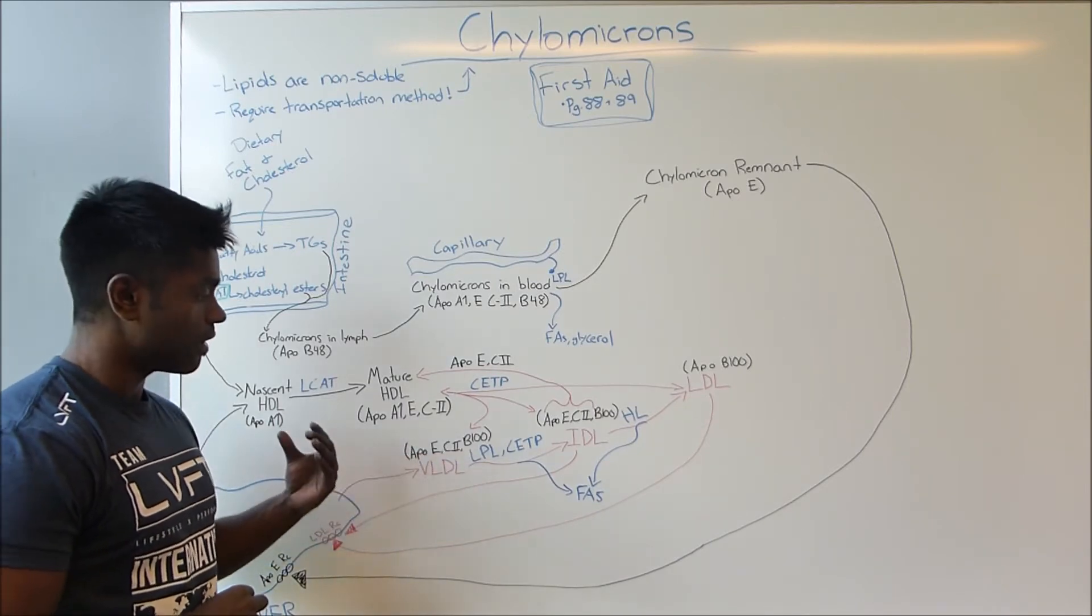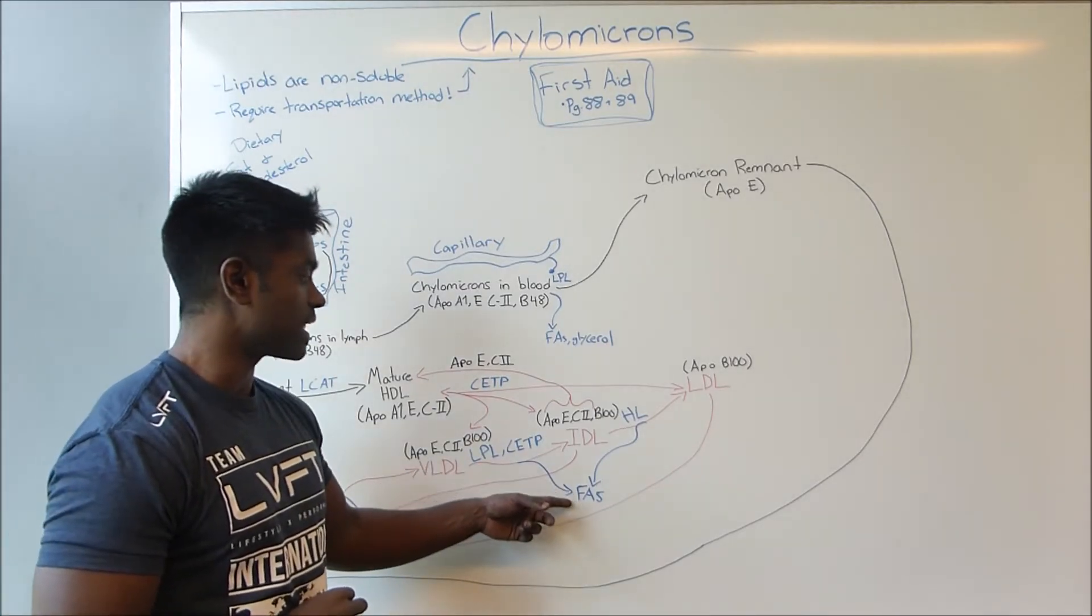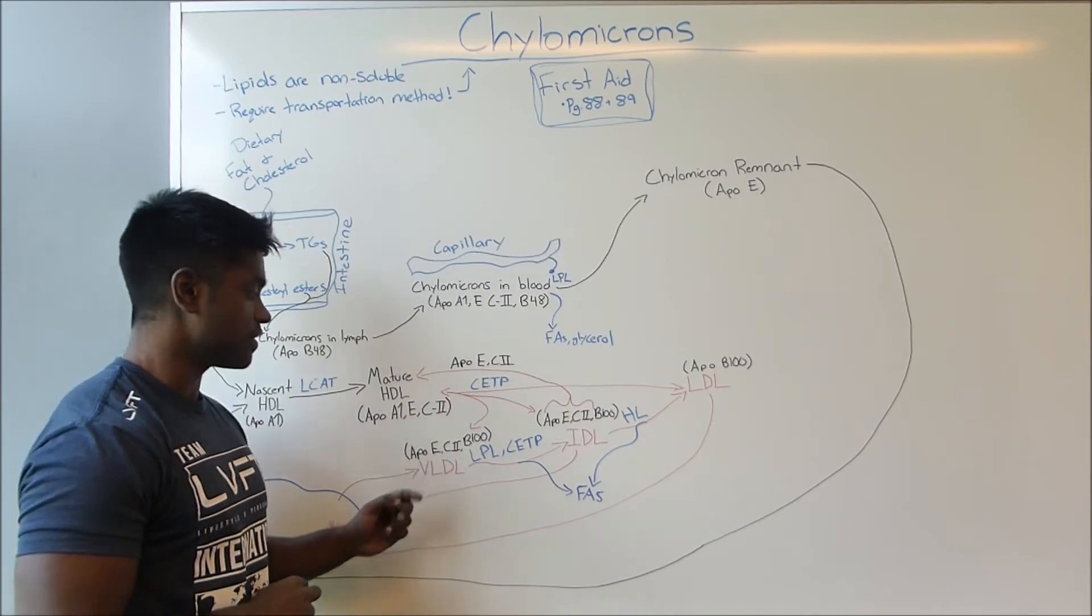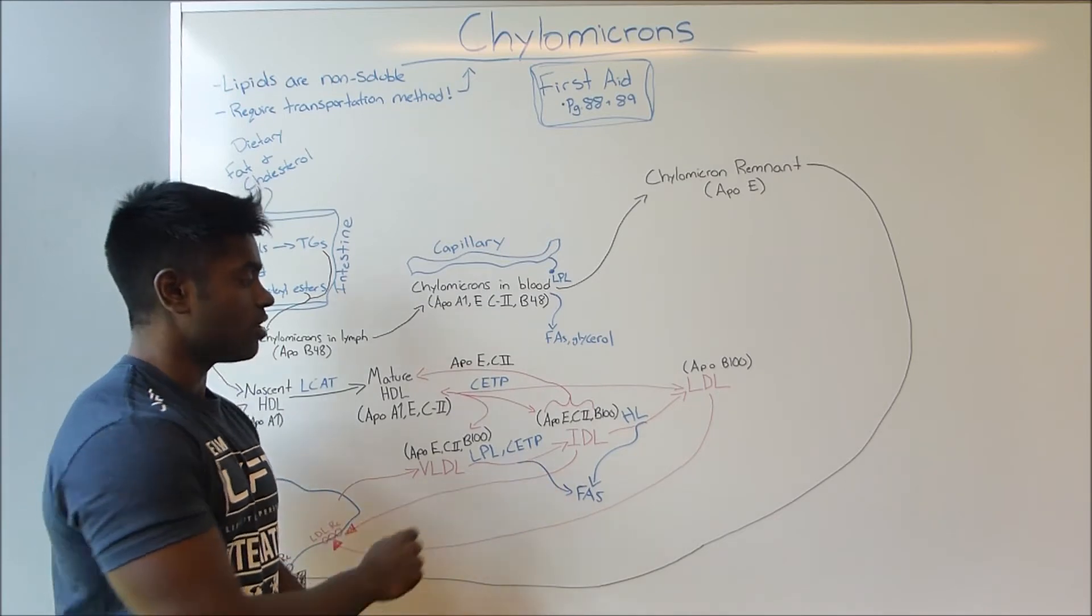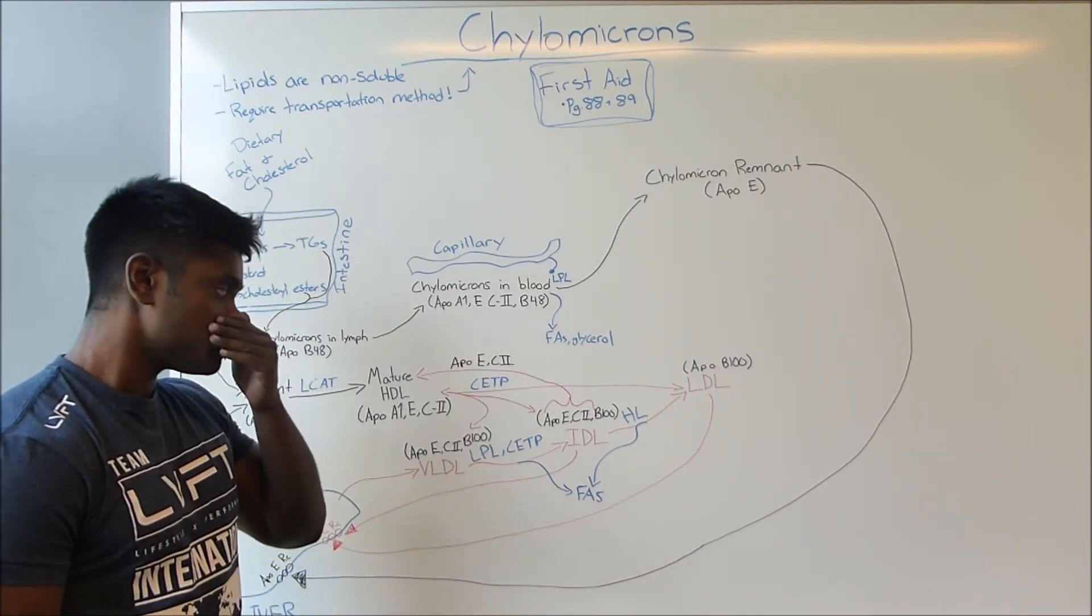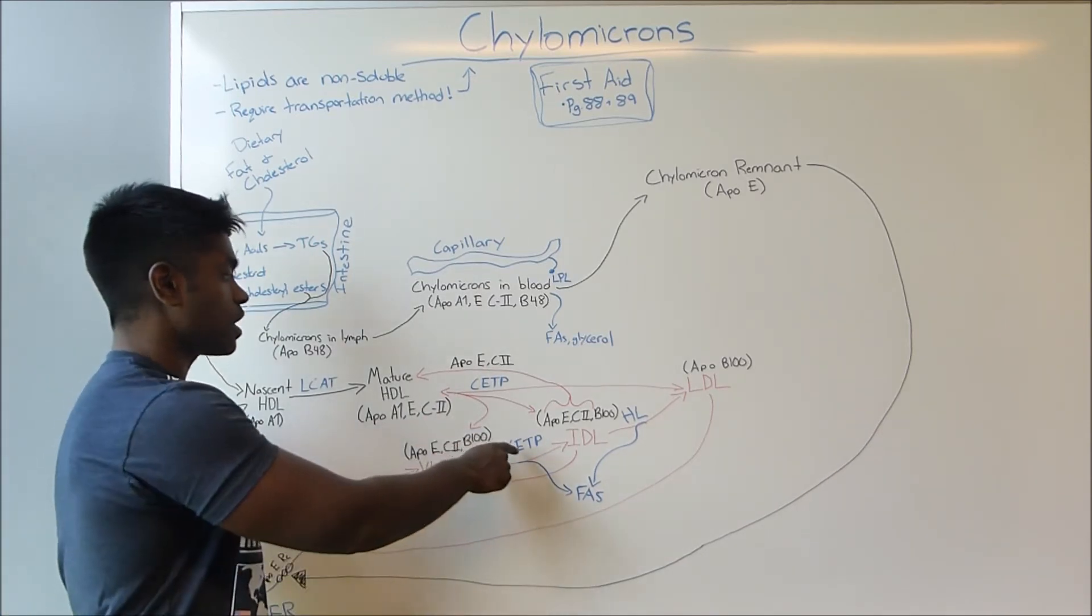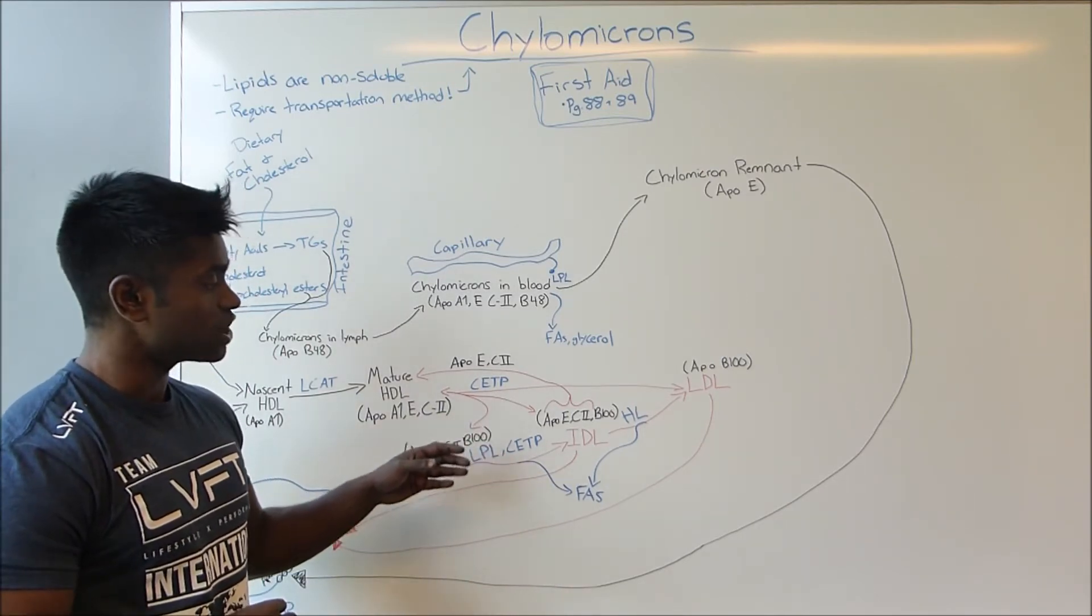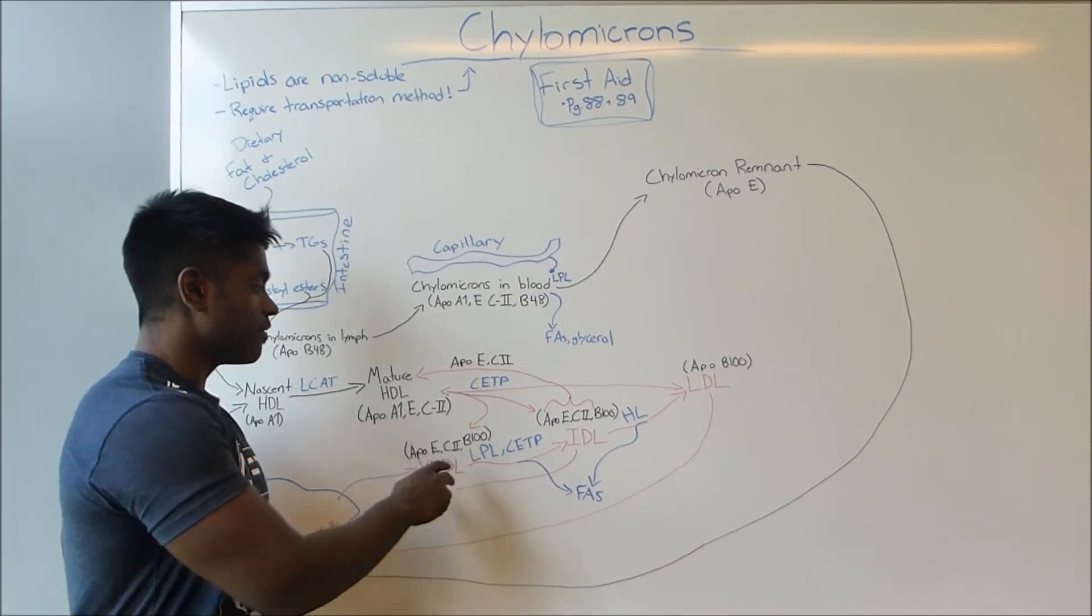This is going to cause a decrease in triglyceride levels in the VLDL. Now here we have a protein called CETP. This enzyme is very important because I'm going to talk about it more when I link to HDL, but we can cover it now. CETP actually is sort of like an exchanger type enzyme where the VLDL gives its triglycerides to the HDL.